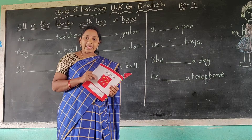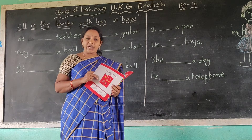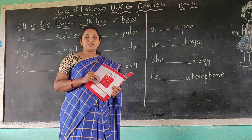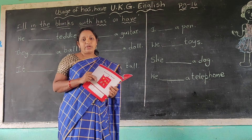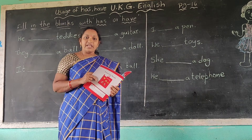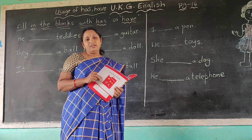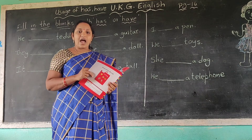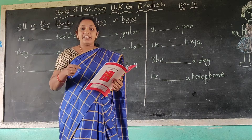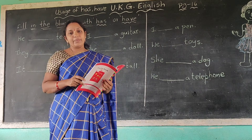I, we, they, and you — these are used with have. Has is used with he, she, it. Have is used with I, we, they, and you.